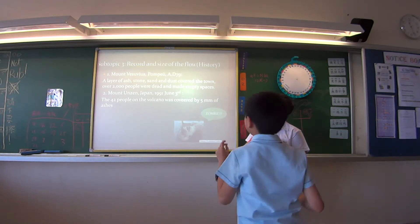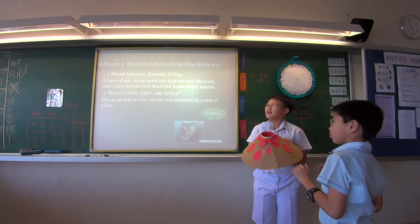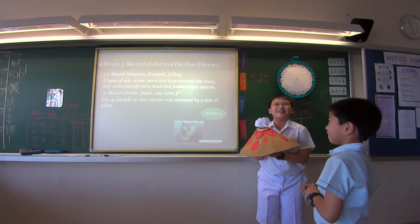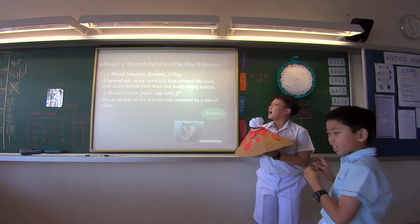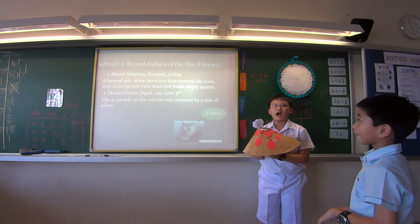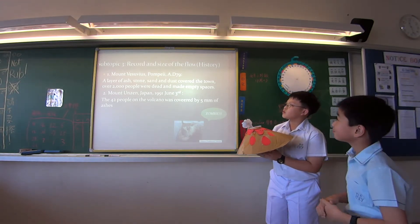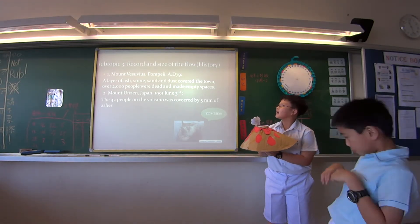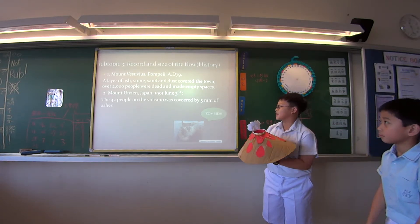In Pompeii AD 79, a layer of ash, stone, sand, and dust covered the town. Over 2,000 people were dead and made empty spaces like this.